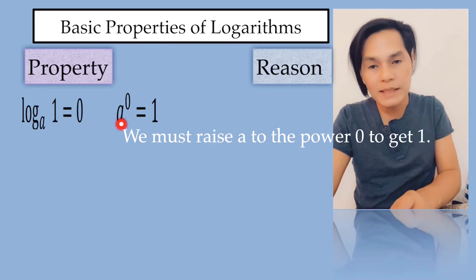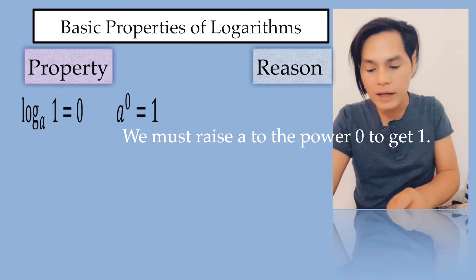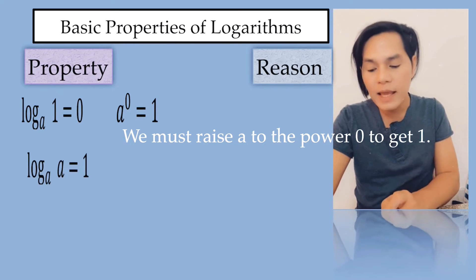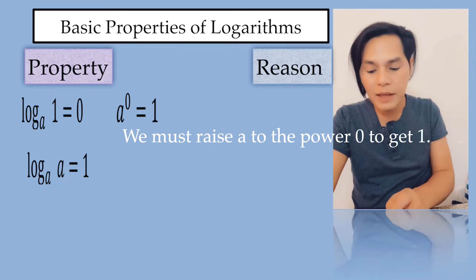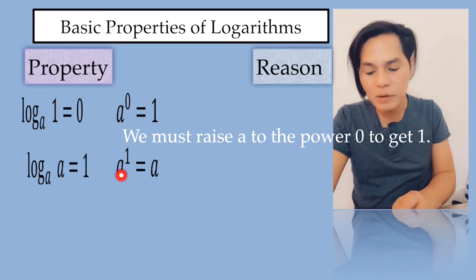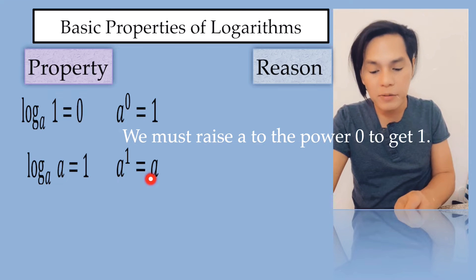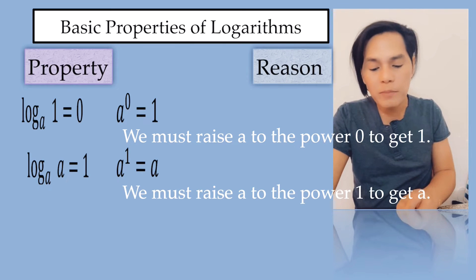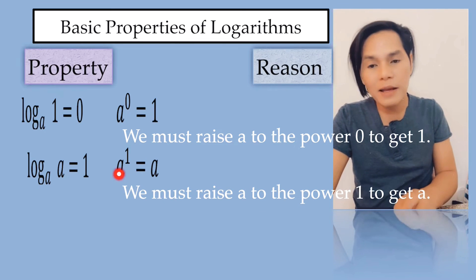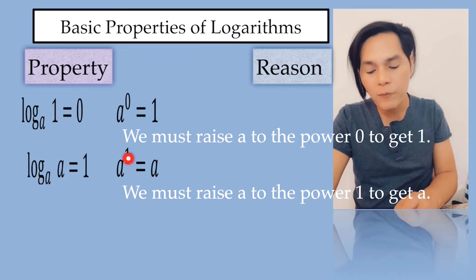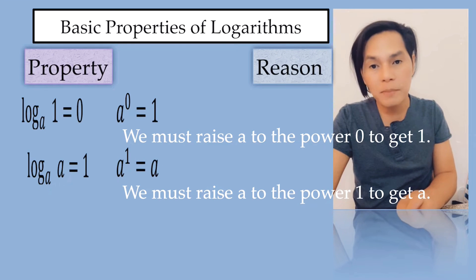Remember that any base raised to the power of 0 is always equal to 1. The next property is the log of a to the base a is equal to 1, which in exponential form is a to the power of 1 is equal to a. We must raise a to the power of 1 to get a, meaning that if the base has a power of 1, then that's equal to the base itself.